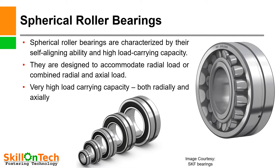A picture of a spherical roller bearing is shown. The rollers are spherical in shape. This is a sealed bearing — spherical roller bearings sealed from both sides are called double Z type; if open from one side, it is a single Z bearing. Spherical roller bearings are characterized by their self-aligning ability and high load carrying capacity. They are designed to accommodate radial loads or combined radial and axial loads with very high load carrying capacity.